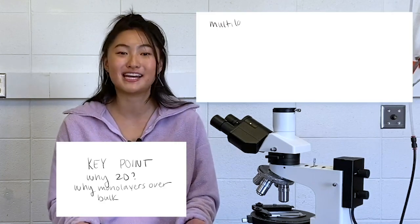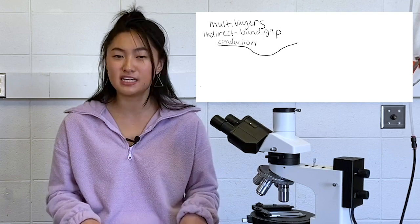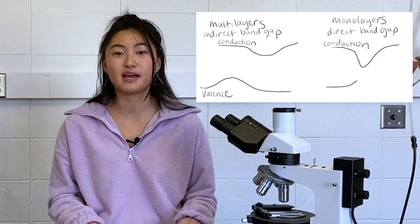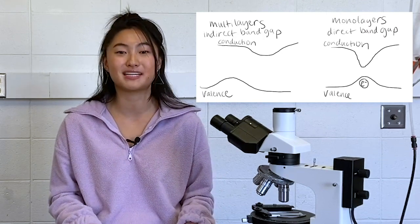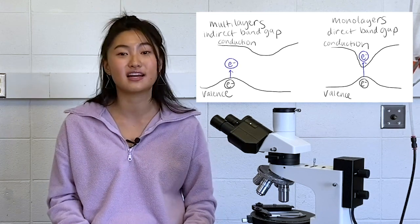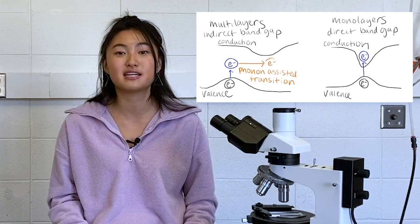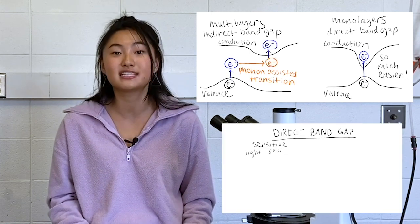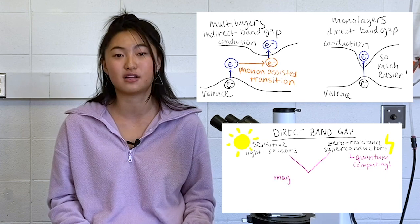Here's a key point. TMD bulk or multilayers have an indirect band gap, but single monolayers have a direct band gap. A direct band gap means it does not take a change in momentum to excite an electron into the conduction band, therefore a more efficient excitonic and conducting process. This means that monolayers have a greater photoluminescence than multilayers and it takes less energy to absorb this excitonic process.